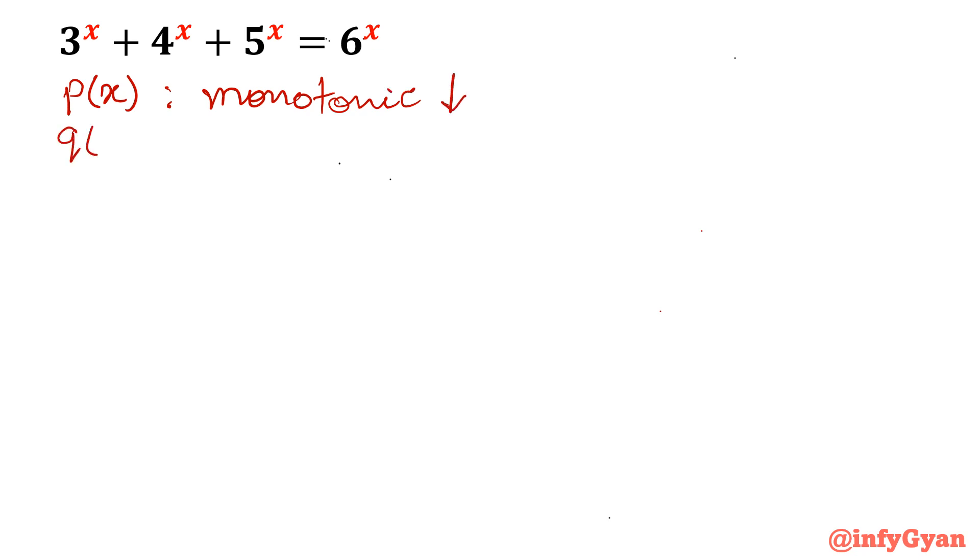And q(x), the right hand side is 1, means it is a constant function. One function is monotonic decreasing and another function is constant.